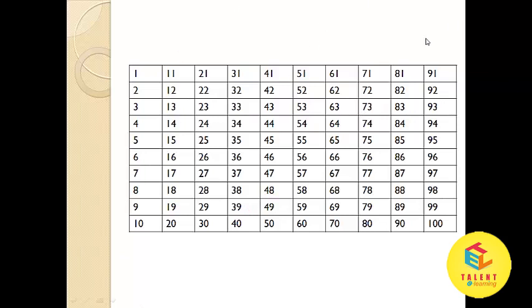Let's have another example using the table. What is 62 plus 12? So where is 62? 62 is here. And 12 is here. So 62 plus 2 is equal to 64, and now jump on 10: from 64 to 74.